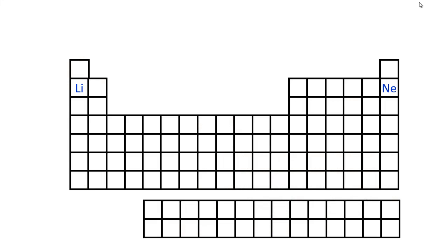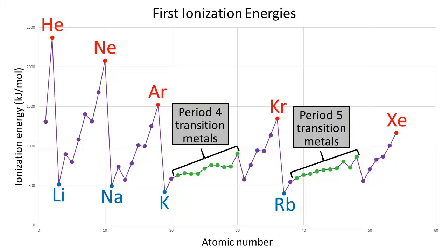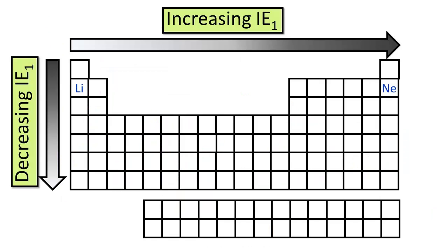What does this look like on the periodic table? The upward climb in first ionization energy with increasing atomic number going from lithium to neon corresponds to going from left to right across the second period. In general, first ionization energy increases going from left to right across a period. As for traveling down a group, the higher atomic number noble gases such as krypton and xenon have much lower first ionization energies than the lower atomic number noble gases like helium and neon. So in general, first ionization energy decreases going down a group of the periodic table.